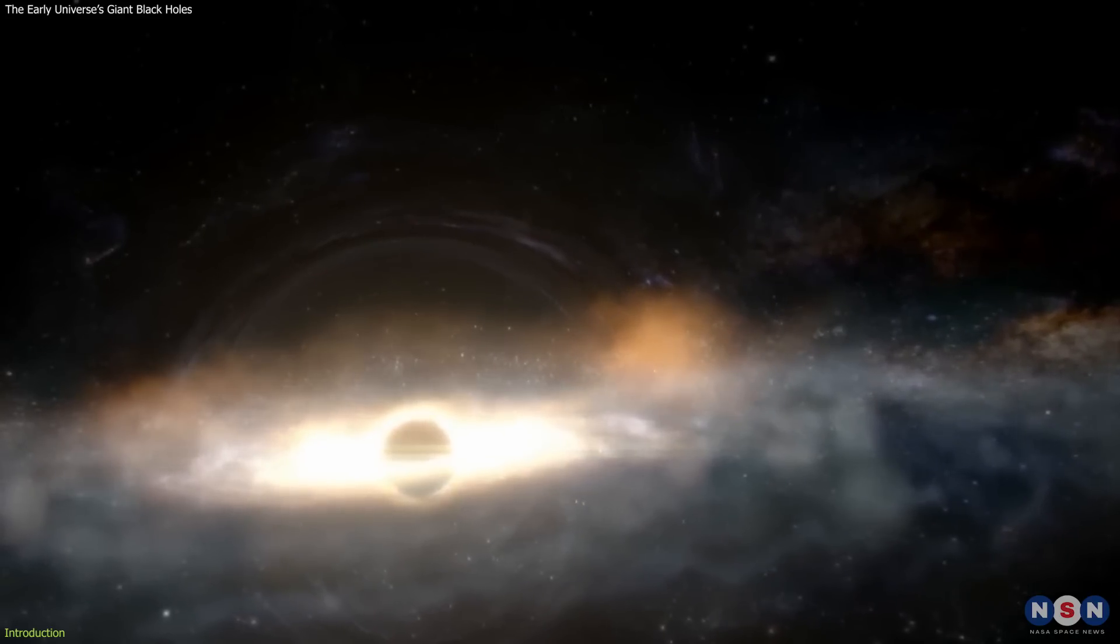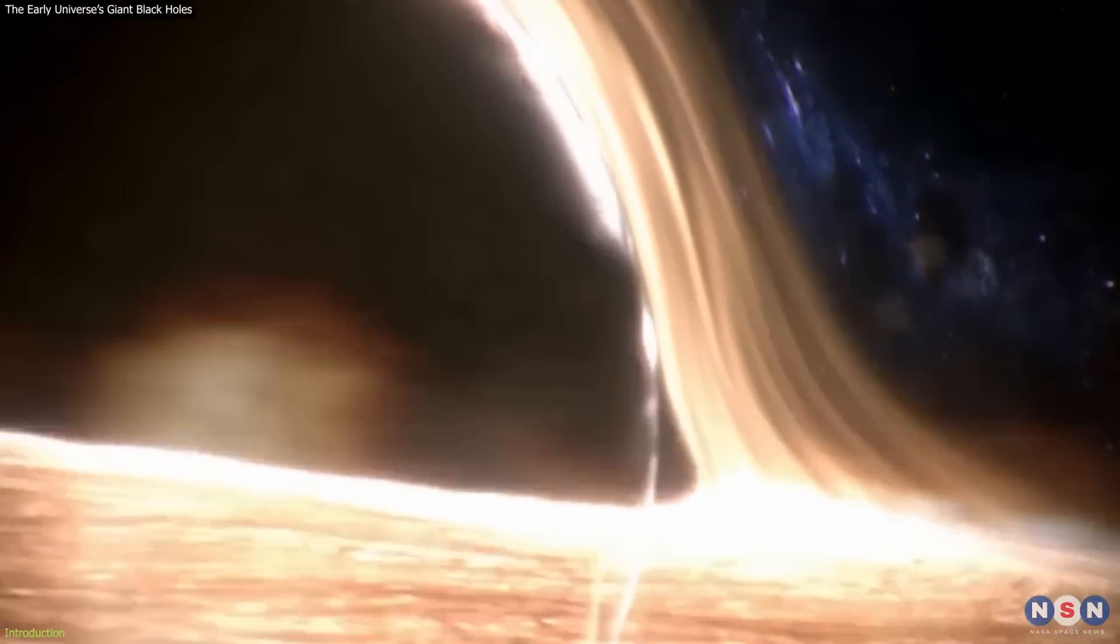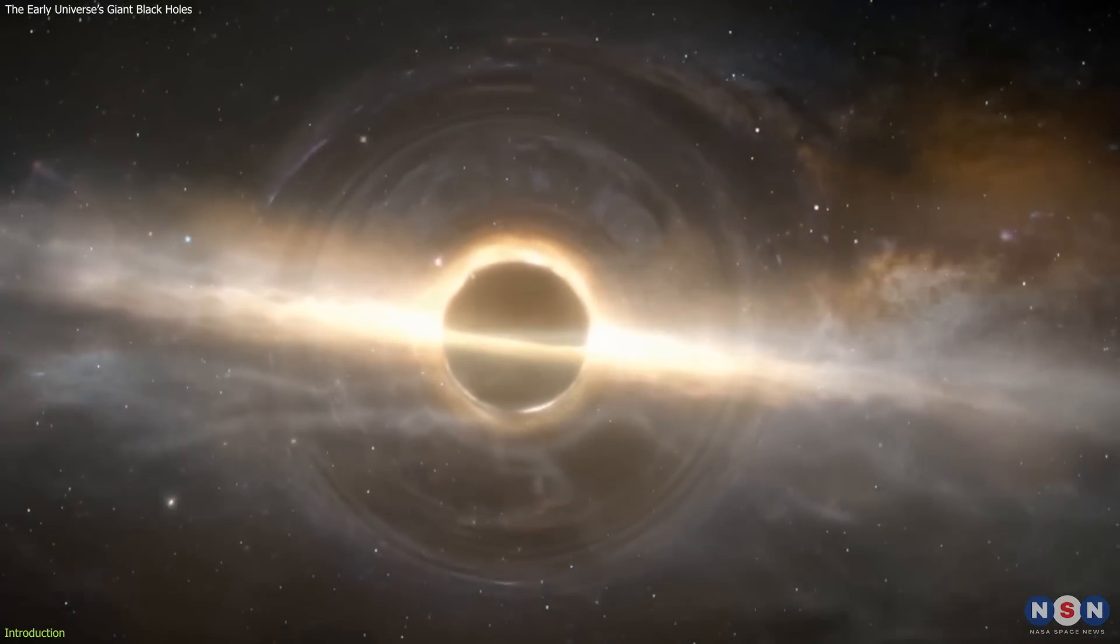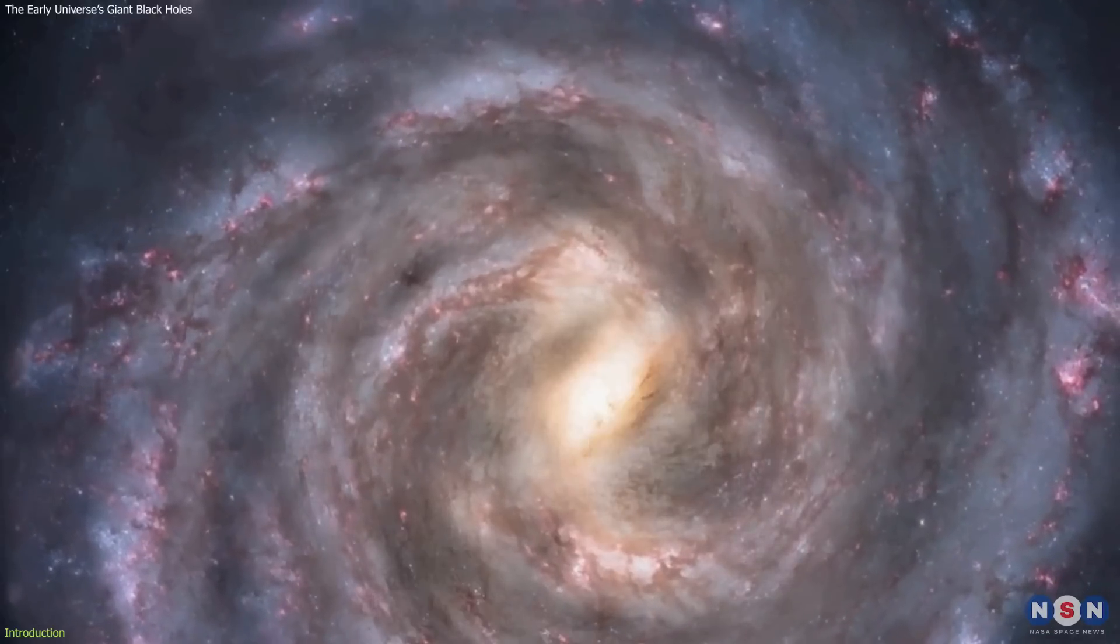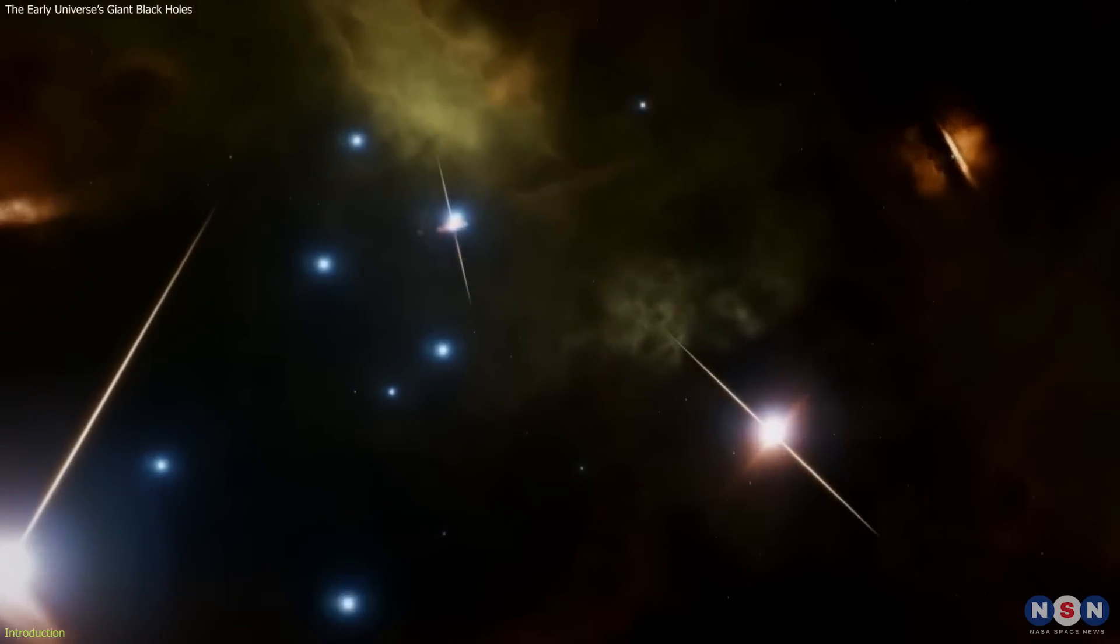We see giant black holes all over the place, spinning and swirling in the hearts of young galaxies. These black holes are the ancestors of the supermassive ones that we see today in the centers of most galaxies, including our own Milky Way. But how did they get there so early? How did they grow so big and so fast?